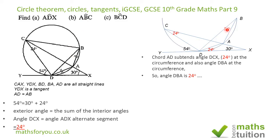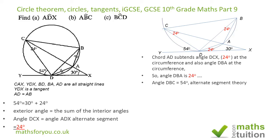We now introduce chord BC. By the alternate segment theorem, since the tangent angle is 54 degrees, the angle in the alternate segment is also 54 degrees. So angle ABC equals 54 plus 24 degrees, which gives us angle ABC equals 78 degrees. That angle is now found.